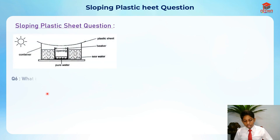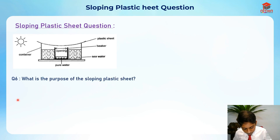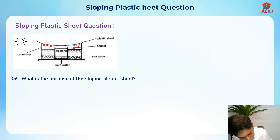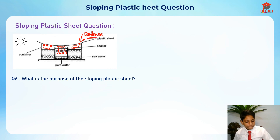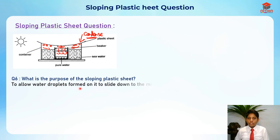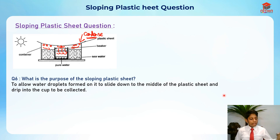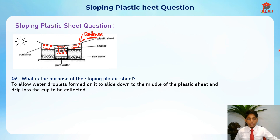For the second question on the sloping plastic sheet: what is its purpose? The plastic sheet allows water vapor to condense to form water droplets on it, which then slide down to the middle and drip into the cup to be collected. This uses some common sense to answer. Please take note that this type of question will appear in PSLE. I hope you've understood my explanation for these questions — thank you and goodbye, I'll see you in the next video!